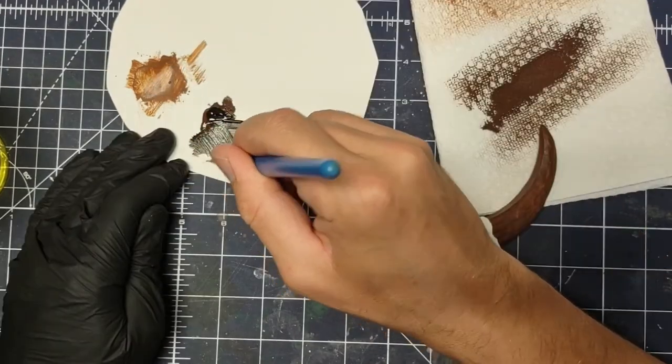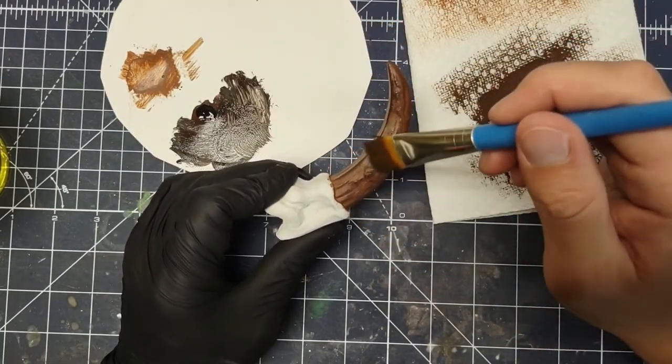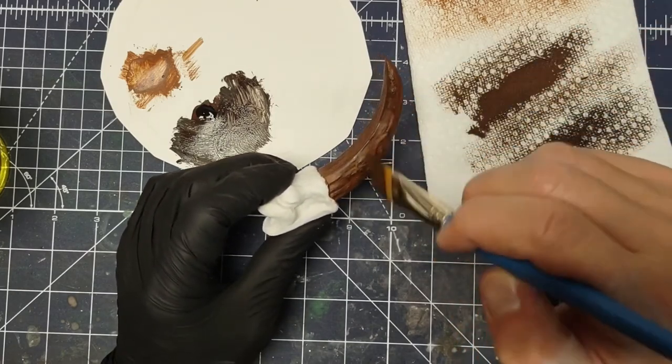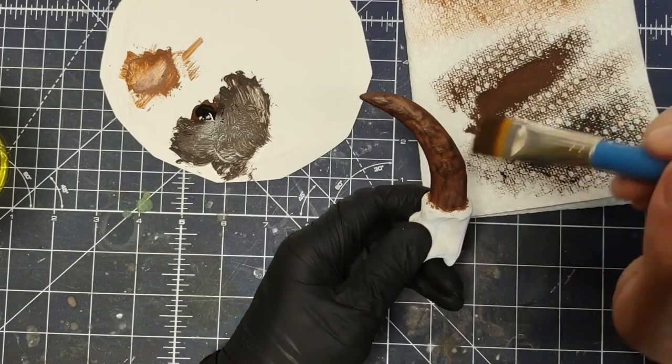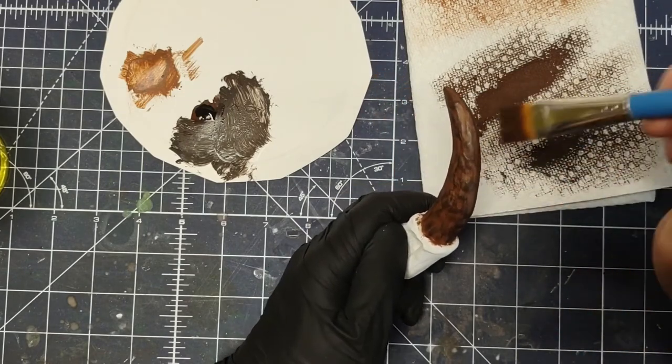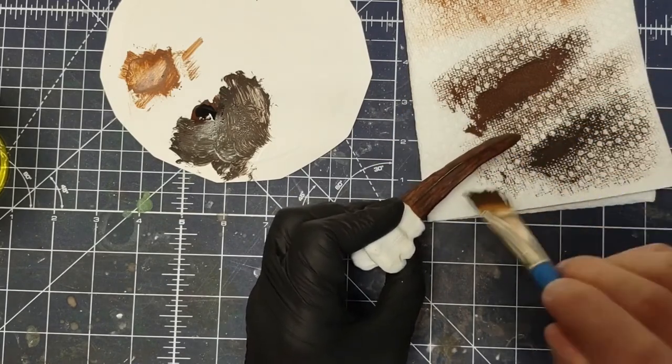Pretty standard dry brushing here, nothing really special. Using a bigger brush will save you some time, but then just watch out to not get any of this dark paint on the bone part. I like how the area under the claw came out, the place I was most worried about.